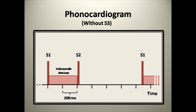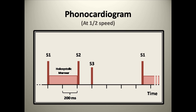And let's add the S3 back in again. Finally, let's listen to the recording slowed down to one half speed. Listen for the S1, S2, and S3, along with the fact that the murmur is nestled between S1 and S2, and that there's actually a gap in sound between S2 and S3. There's a little bit of reverberation of the S3, which again adds to the trickiness of the example.